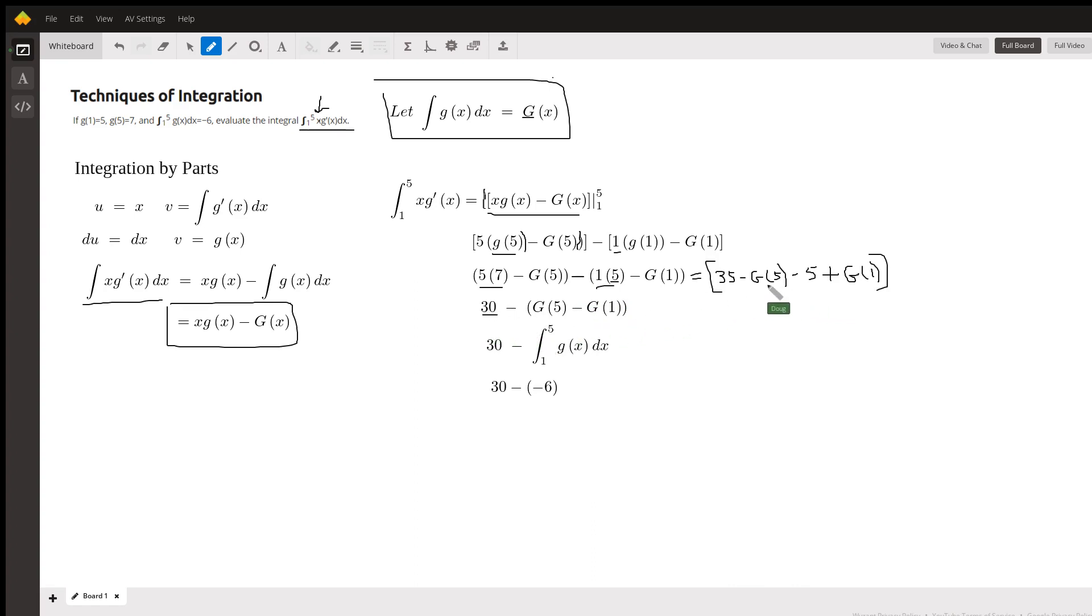Now I've got minus g(5) plus g(1). I'm going to factor out the minus sign. The reason is that G(5) minus G(1) is the same as the definite integral from 1 to 5 of little g(x).